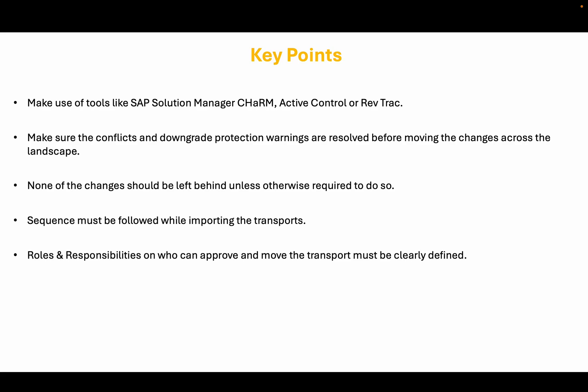If the conflicts are not resolved, the changes created by one developer will be overwritten by the other when changes are moved into production, and the system will not work properly. You should also make sure that all transports imported into the test system are also imported into the production system, and none are left behind. Maintaining the sequence while importing transports is also important. Only certain people should be able to approve changes to be moved from development to test and test to production, to ensure control and governance. Tools like ChaRM, Solution Manager, ActiveControl, or RevTrack should be used to ensure transports are correctly captured, conflicts and downgrade protection warnings are resolved, and transports are moved across the landscape in a sequential manner.